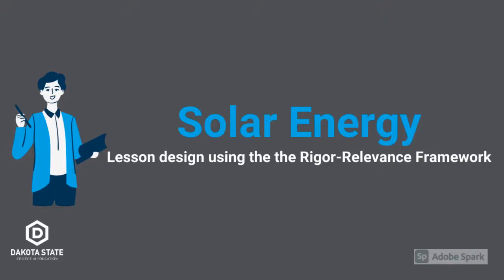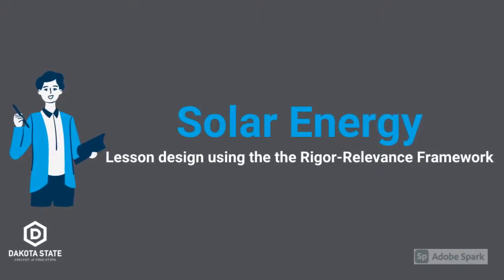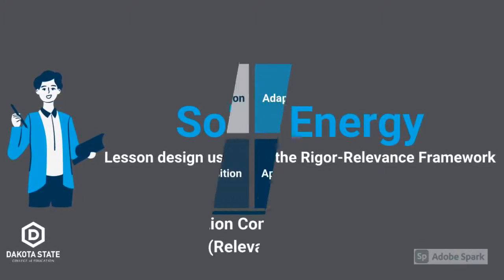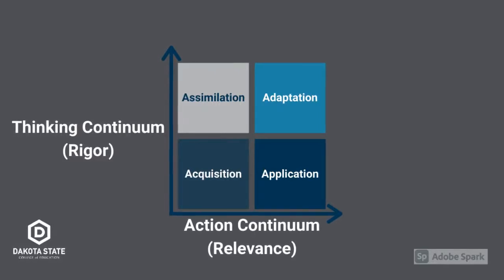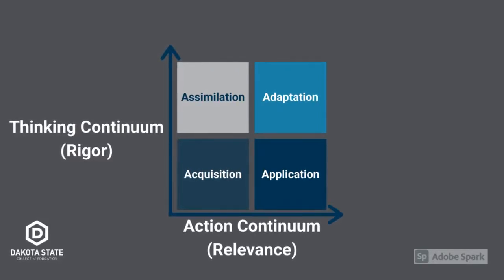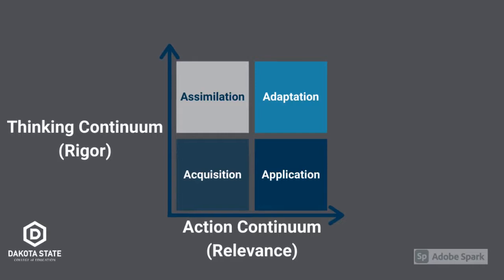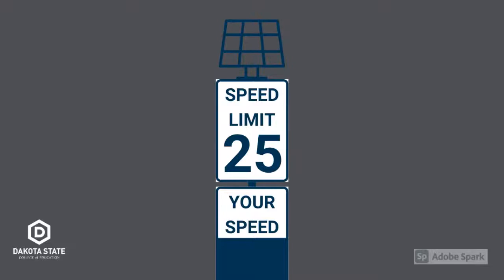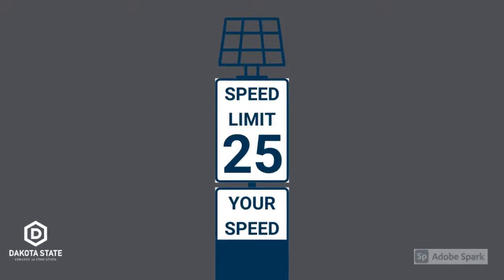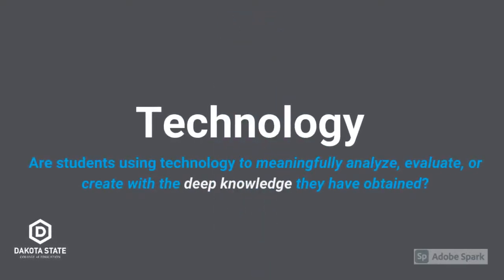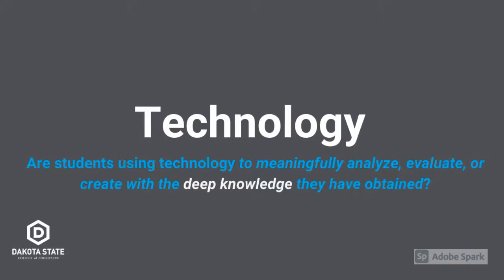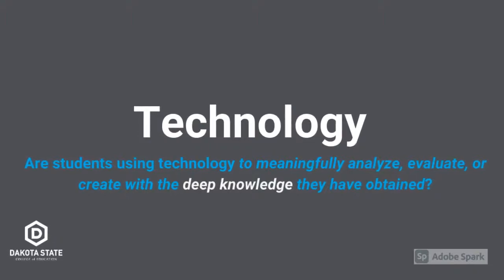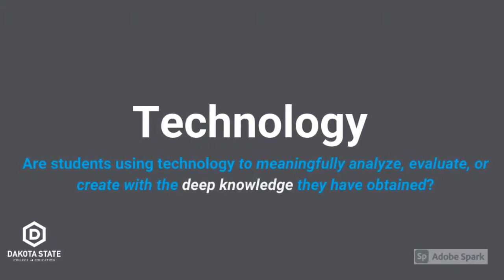A high school science teacher is teaching a unit on energy and the next topic is solar energy. He thinks about the rigor relevance framework and how he can push his students as high up the thinking and action continua as possible. He might implement a project where students solve a problem by creating something for the real world, such as a solar-powered flashing speed limit sign for a street by the school. To solve this problem, students must have a deep knowledge of the scientific principles of solar energy absorption, storage, and use.